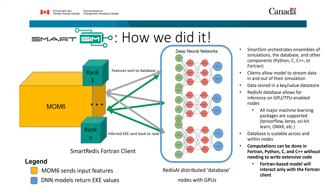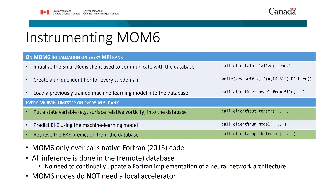Here's what the code looks like in MOM6 — it's pretty easy to instrument, about 50 lines of code. You initialize the client that communicates with the database, set identifiers, load the machine learning model into the database, and then every time step on every MPI rank, you put a tensor, run the model to get a prediction, and retrieve a tensor from the database.